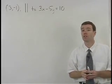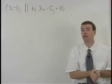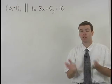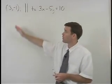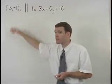To write the equation of a line, we need a point and a slope so that we can use the point-slope formula. And here, we're given a point, but we don't have a slope.